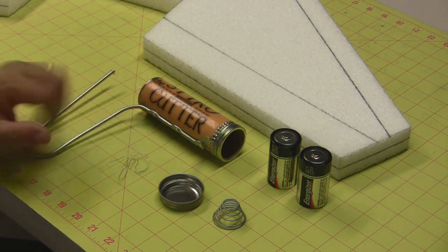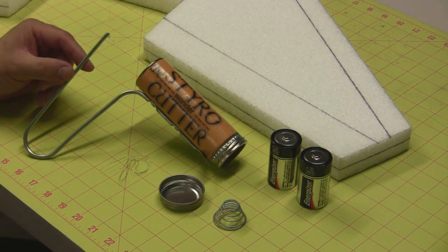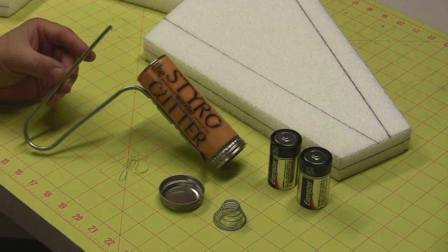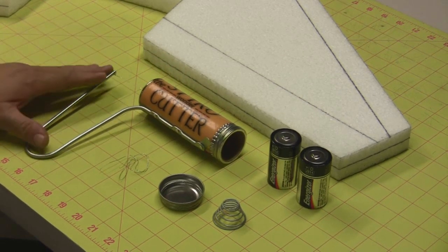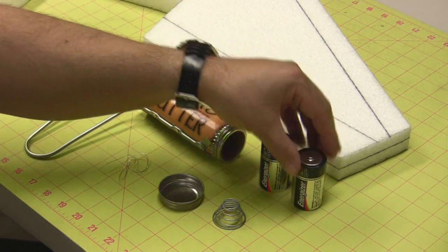Basically these are the parts that come with it when you buy it. It's a fairly inexpensive hot wire. I've seen it priced anywhere from $7 up to $12 or $13. I got this one while on vacation in California at Michaels on sale for $6.99. It comes with everything except the batteries. You'll need two D-cell batteries.